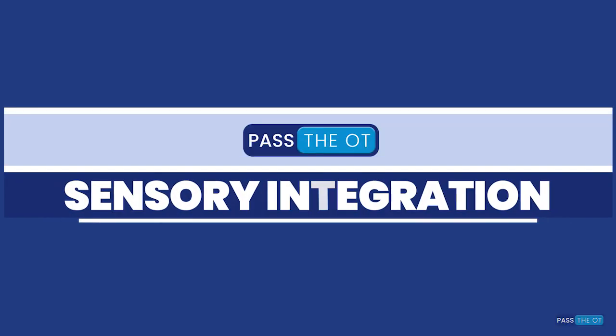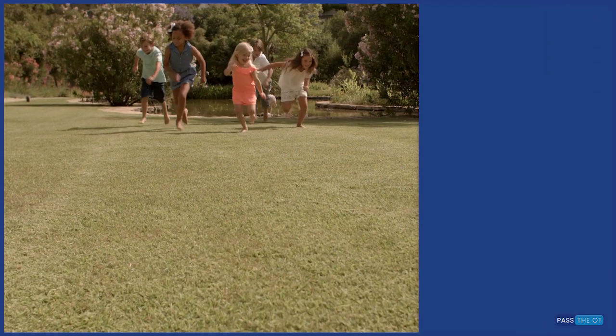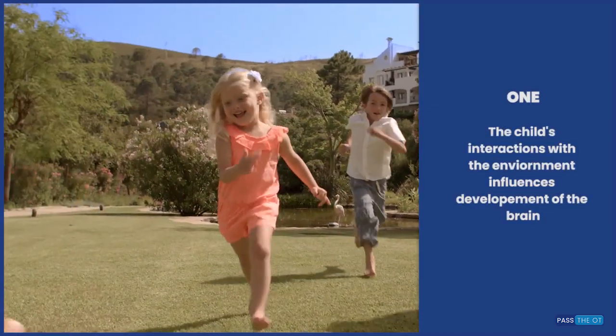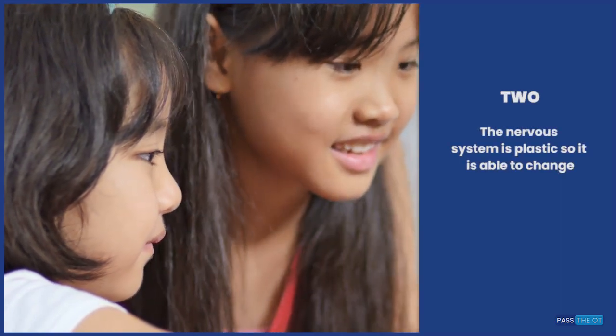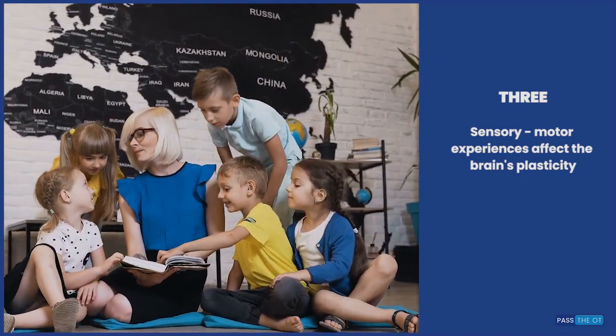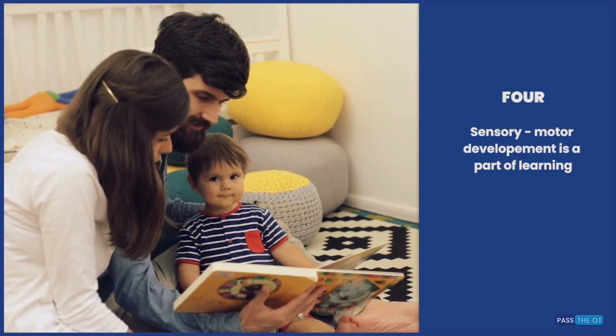Remember that the harder the victory, the sweeter the reward. Let's get into it. The main points of sensory integration are: one, the individual's interaction with the environment influences development of the brain; two, the nervous system is plastic and able to change; three, sensory motor experiences affect the brain's plasticity; and four, sensory motor development is a part of learning.